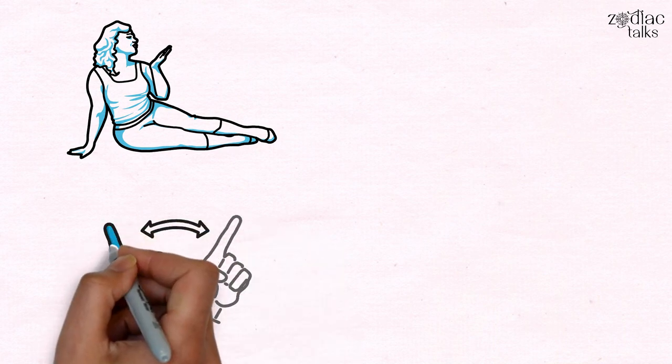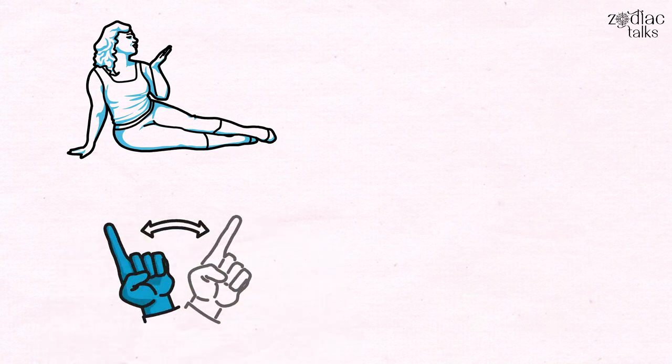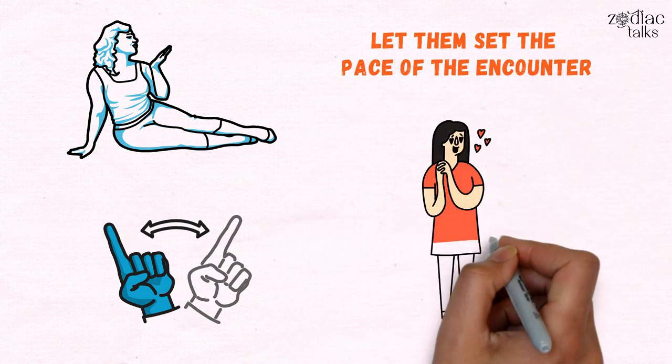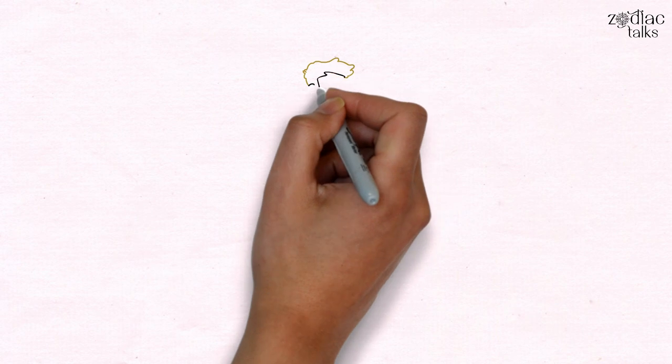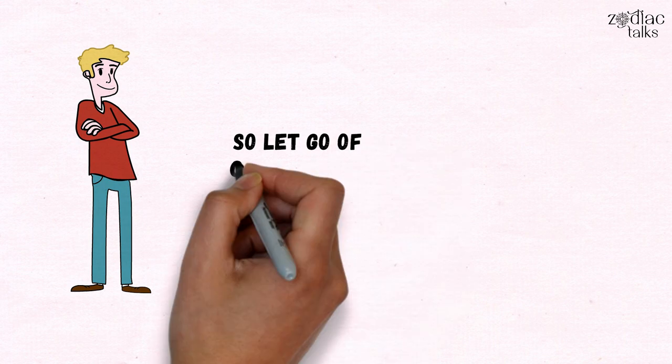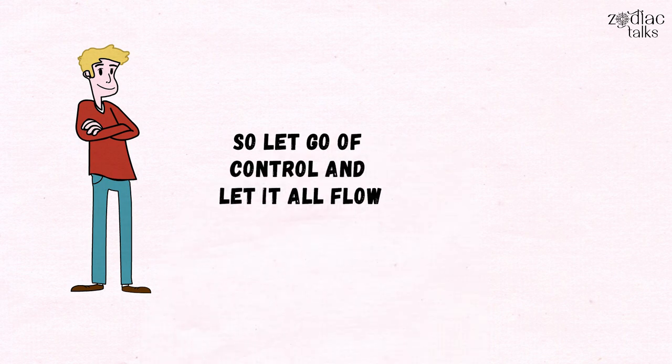If you're going to date an Aries, don't bother trying to take the lead. Let them set the pace of the encounter, and you'll find it much more satisfying. These natives know exactly what to do to guarantee instant gratification. So let go of control and let it all flow.